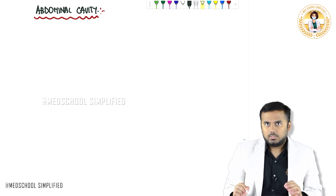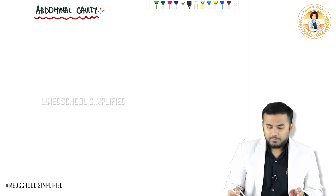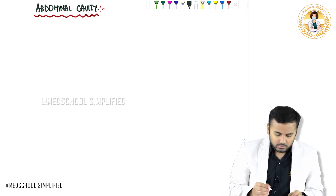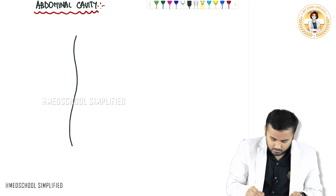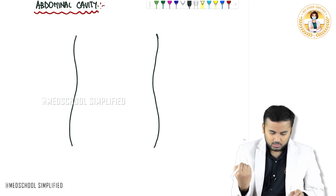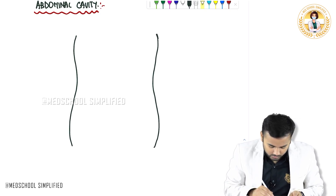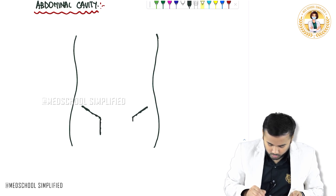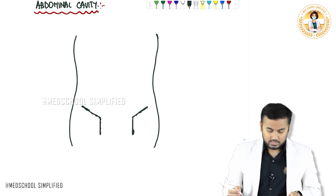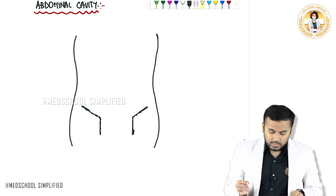Let us also draw a picture of the pelvic cavity and see what are the boundaries of the pelvic cavity. So in the abdominal cavity, you can see a bone here — on both sides you have got the pelvic bone like this. These are the pelvic bones.